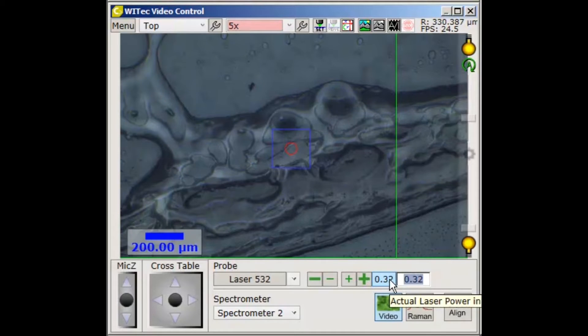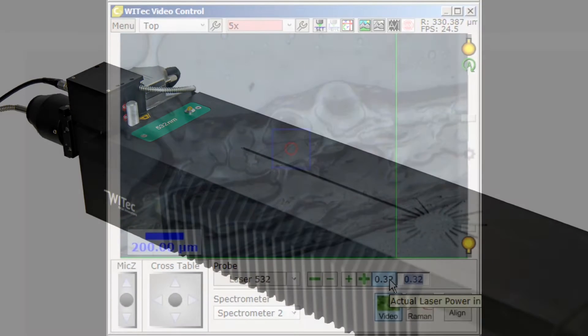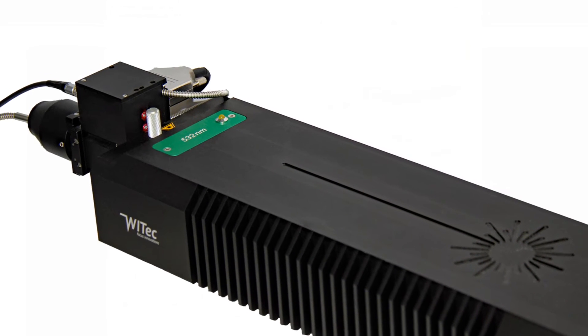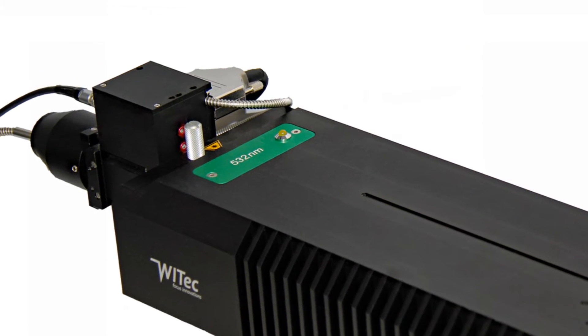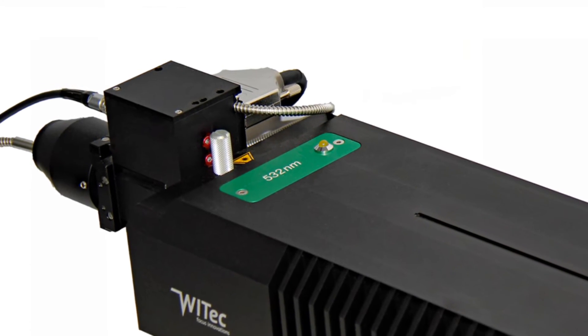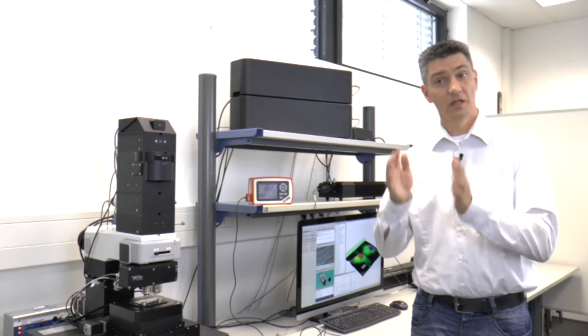The big advantage is in addition that with this true power module you set the power without the shutter being open that means you don't expose your sample to laser power while you find the right setting. So with the true power you can set an arbitrary power within the fiber in milliwatts. It's not relative values such as when you use neutral density filter so you get 50 percent 10 percent 5 percent or something like this it's absolute value in milliwatts.